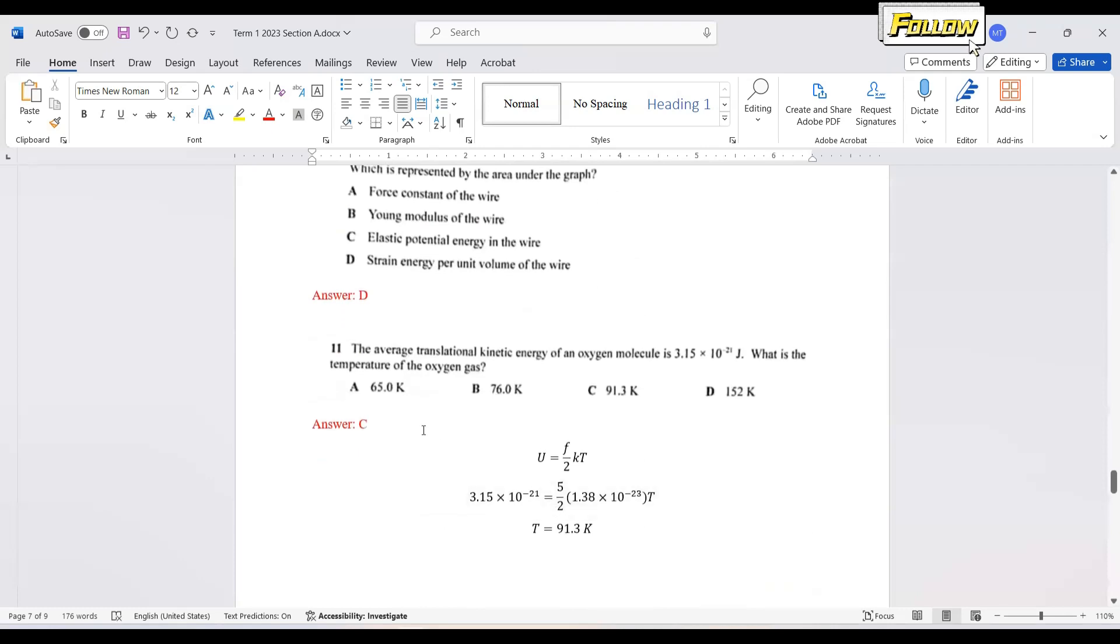We move on to question 11. Average translational kinetic energy of an oxygen molecule is this. What is the temperature of the oxygen gas? We learn about the average translational kinetic energy is given as f over 2 kT. Since it is an oxygen molecule, it is a diatomic molecule that the degree of freedom is equal to 5. The Boltzmann constant is given in the question paper. Just put in all those values, you should be able to obtain the temperature is 91.3 Kelvin. Answer is C.